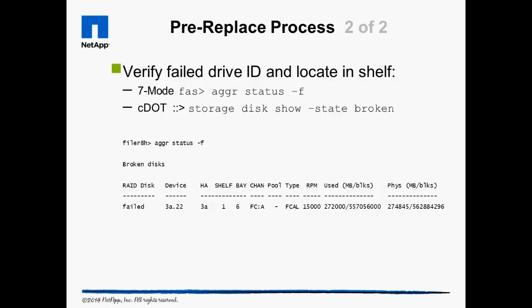The sample console output confirms disk ID 3a.22 has failed and is located in drive bay 6 of shelf ID 1.